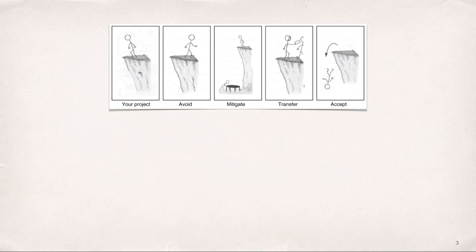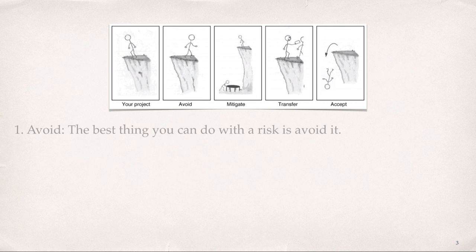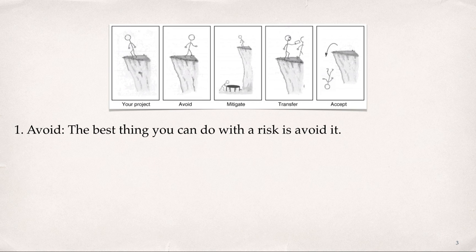We begin with a humorous look at risk management from the view of the project manager. In the assigned reading for this module, Watt uses the metaphor of a project manager standing on a cliff at the start of the project with the risk of falling off. In this example, there are four ways to handle a risk. The first is to avoid it. The best thing you can do with a risk is to avoid it. If you can prevent it from happening, it definitely won't hurt your project. The easiest way to avoid this risk is to walk away from the cliff, but that may not be an option on this project.